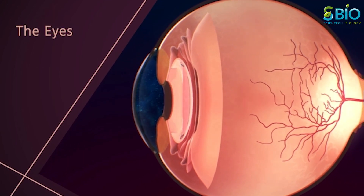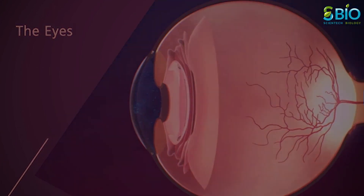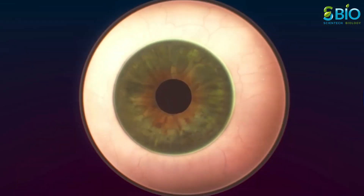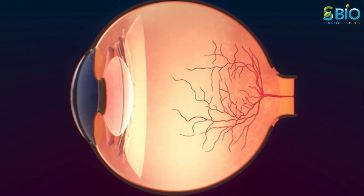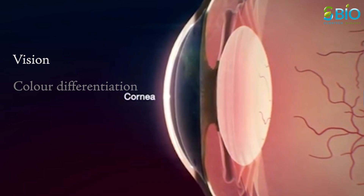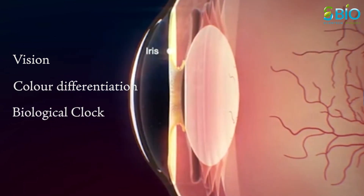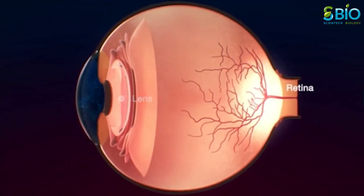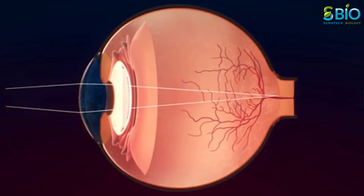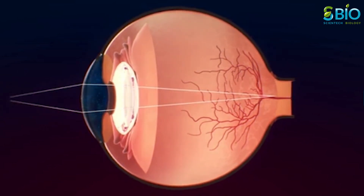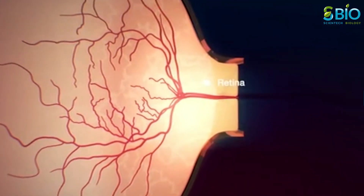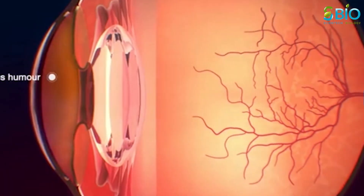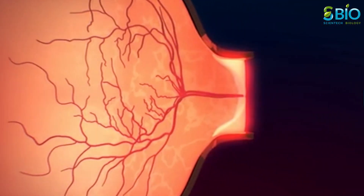Hello friends, welcome to Scientech Biology. Structure of an eye is an important topic to understand as it is one of the most important sensory organs in the human body. It is mainly responsible for vision, differentiation of colors, and maintaining the biological clock of the human body. The human eye can be compared to a camera as both work by gathering, focusing and transmitting the light through the lens for creating an image of an object. To understand more in detail about our eye and how our eye functions, we need to look into the structure of the human eye.